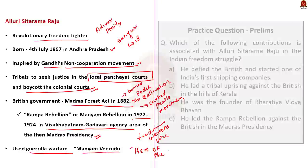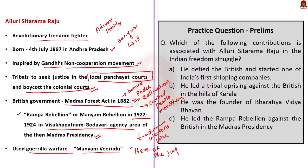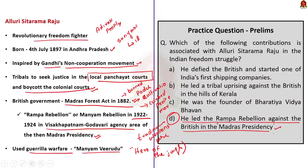Now let us approach the question. Four statements are given and we have to find which statement is associated with Alluri Sitarama Raju. Option D — he led the Rampa Rebellion against the British in the Madras Presidency — is correct. So, the correct answer here is option D.